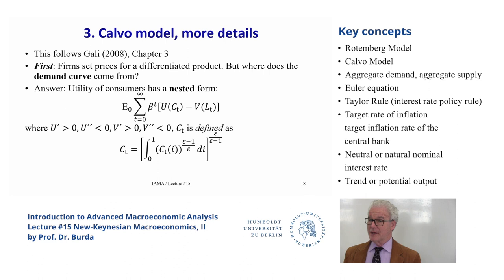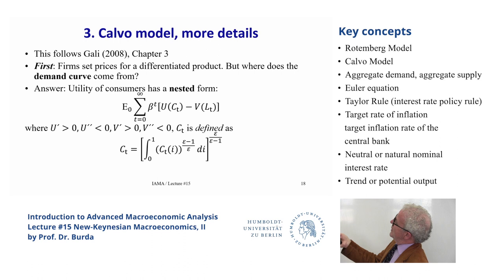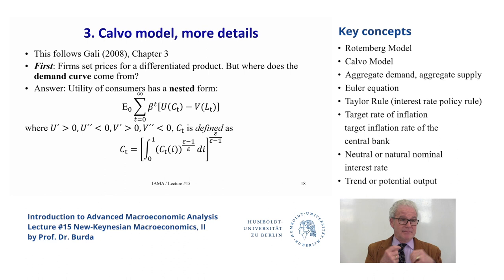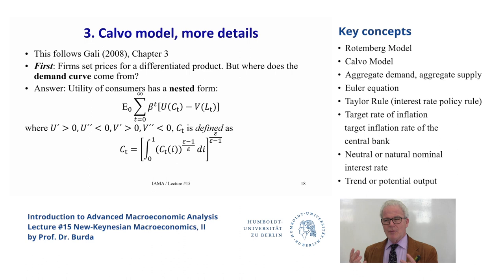The integral from zero to one sums over a large number of different products — in theory, an infinite number — each indexed by I. Every product enters my consumption valuation as a function of epsilon and how much I'm consuming. Otherwise, they're all the same: a symmetry hardwired into the problem. It doesn't have to be that way, but it makes things tractable.